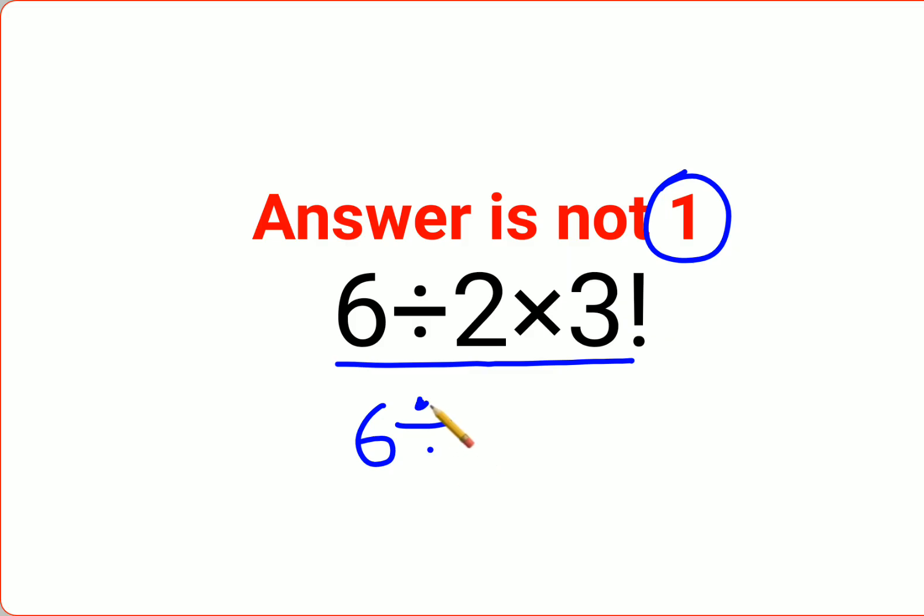Unfortunately, a lot of people thought that 2 multiplied by 3—they thought 6 divided by 2 multiplied by 3 is the same as 6 divided by 2 into 3, which is 6 divided by 6, so the answer is 1. No, that is not how these things are supposed to be done.